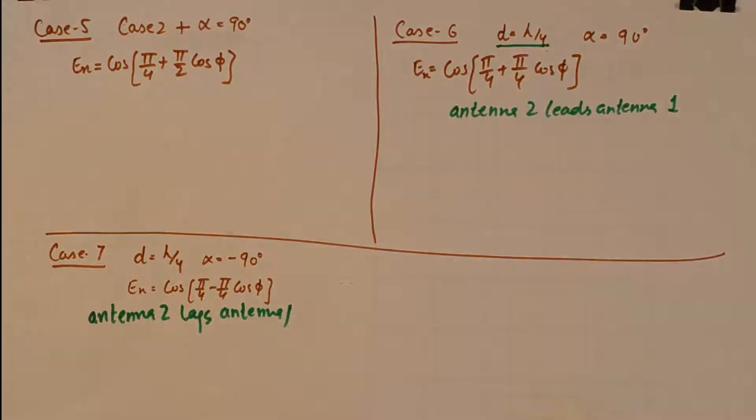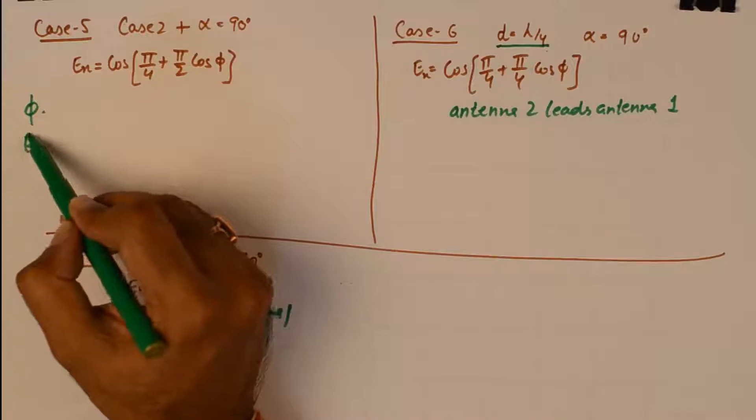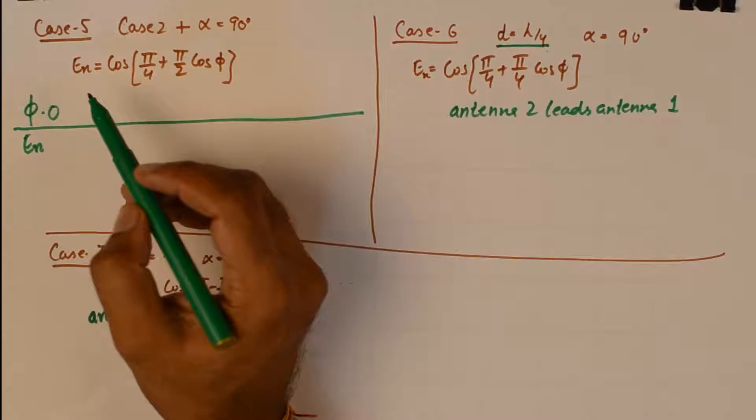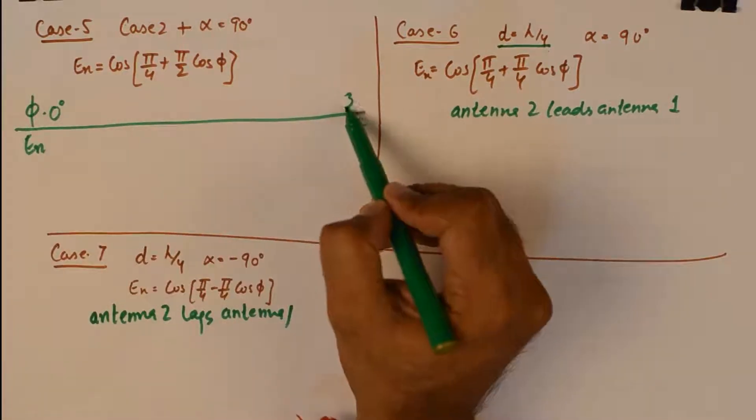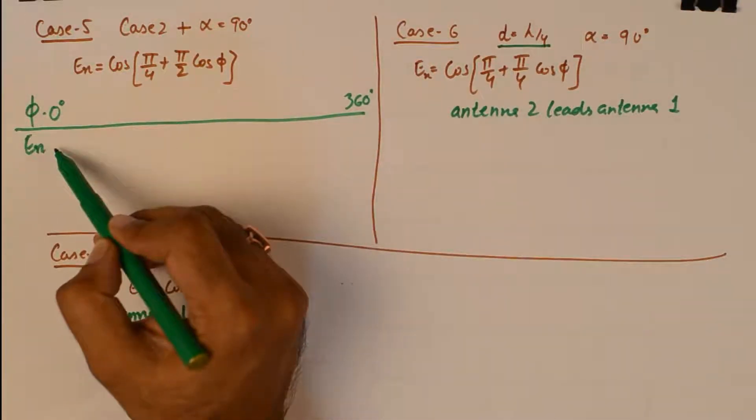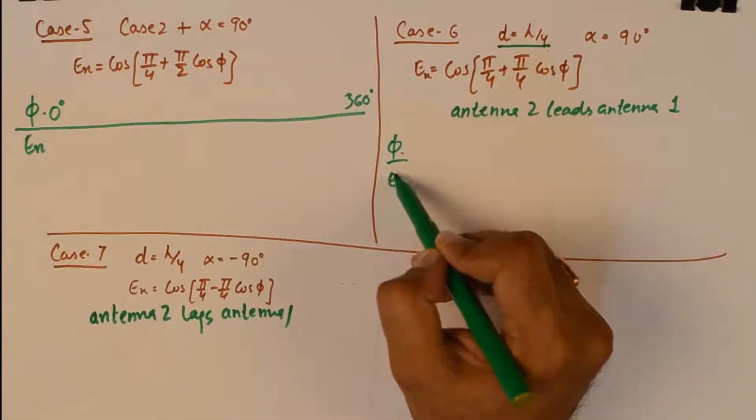Now from the previous discussion, we know that if we know the array factor, the only step which is left is to draw the table of phi versus En. We will try to verify from zero to 360 degrees. We will like to take as many angles we can, and we will find the values of En. And we will do this for each and every case.